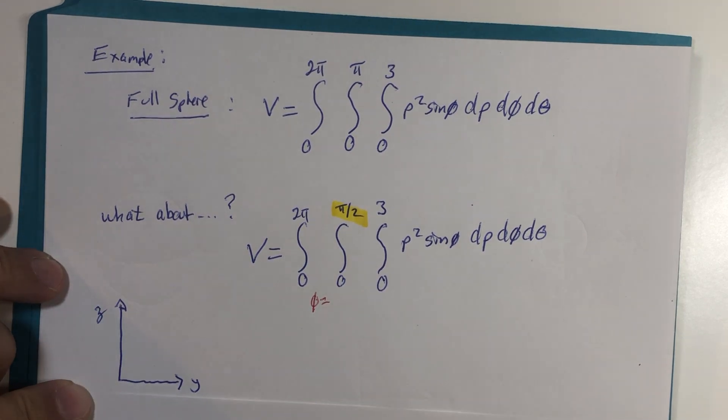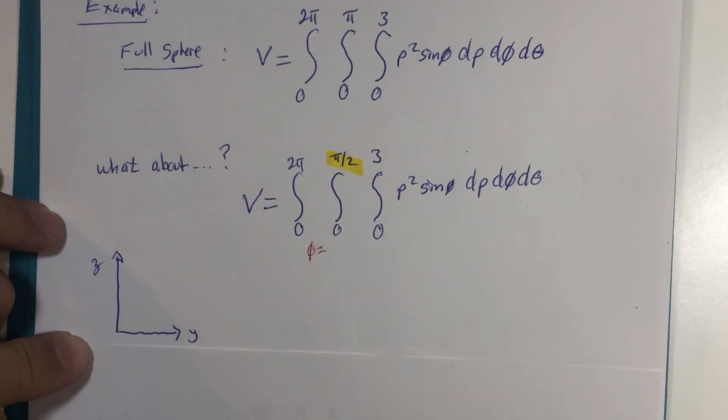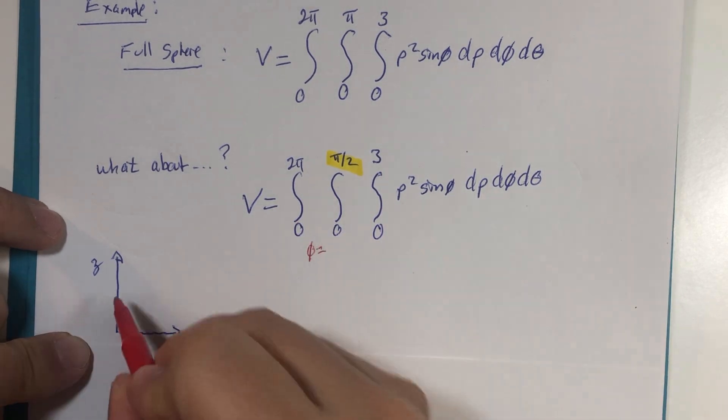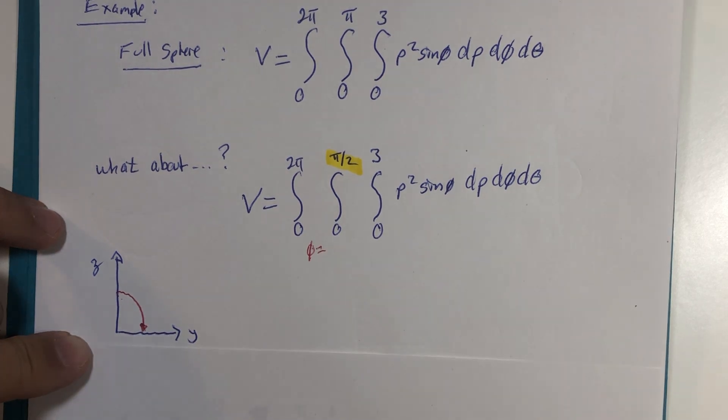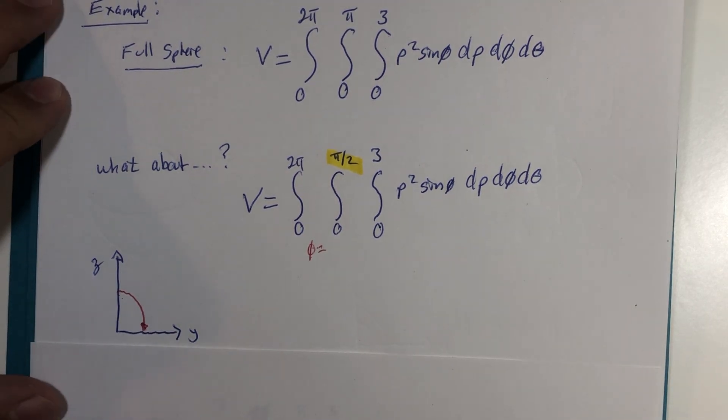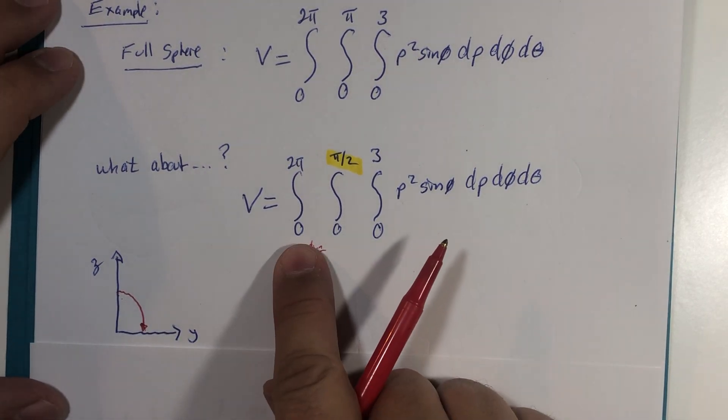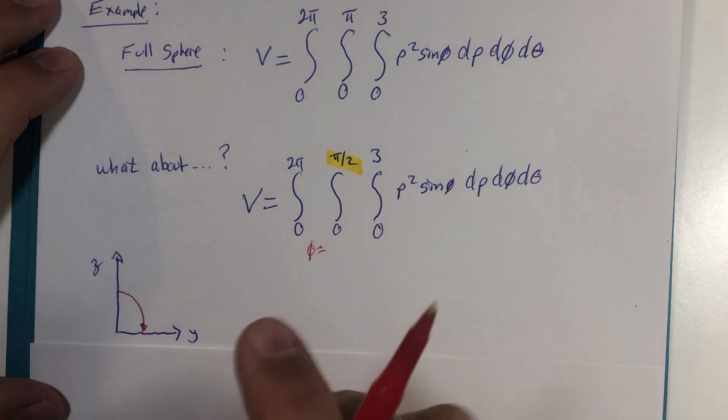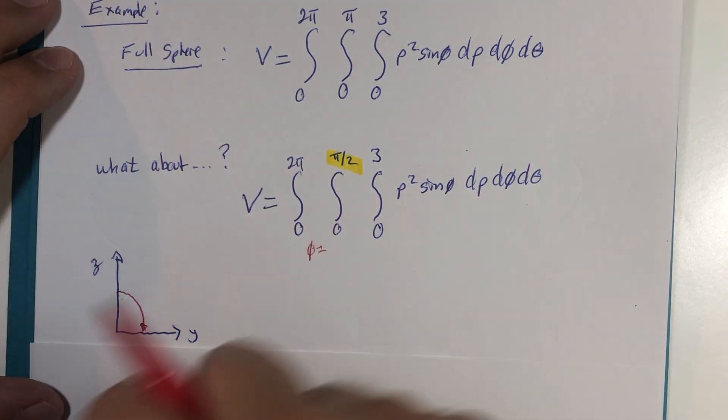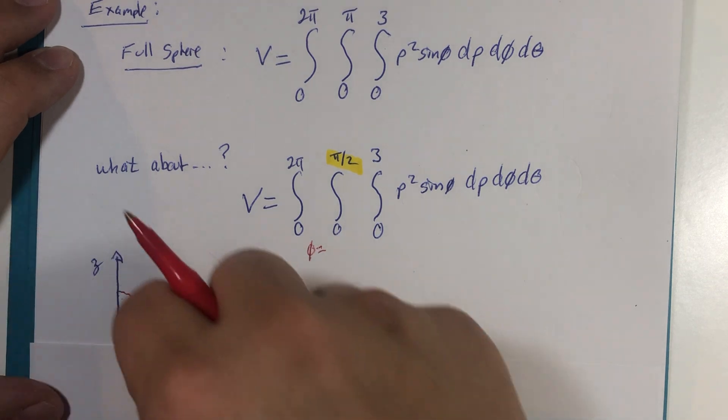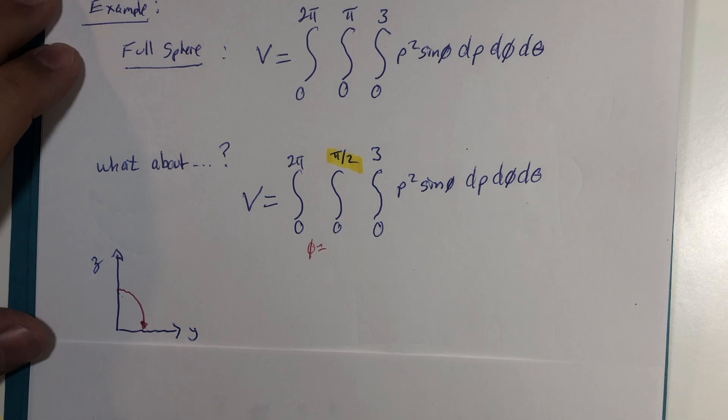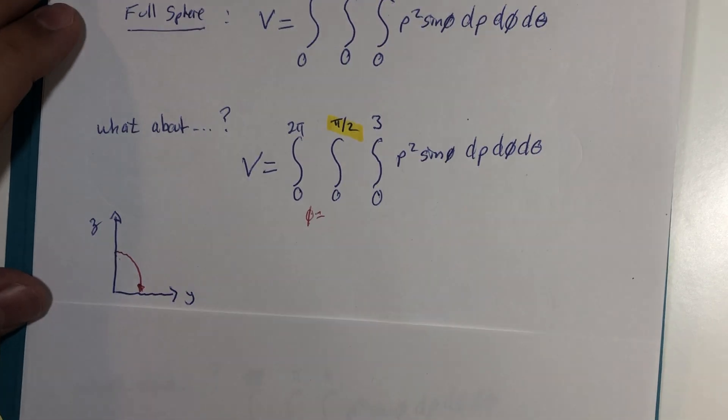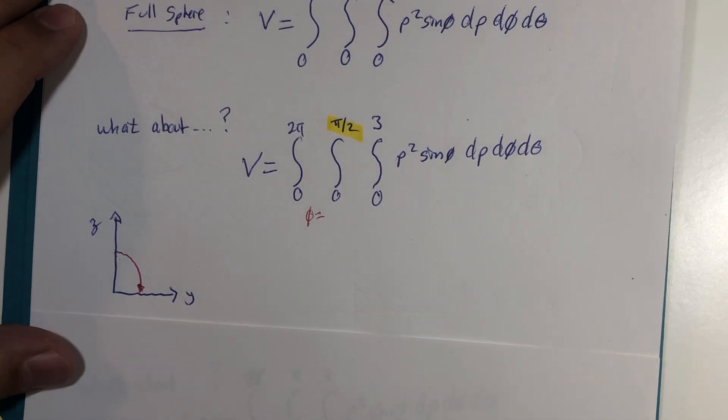Y and z. If phi only goes from zero to pi over two, I wonder what that means for the sphere. Theta still goes zero to two pi, so it's going to rotate all the way around the z-axis. But phi only goes from zero to pi over two. Well, what that means for our picture.